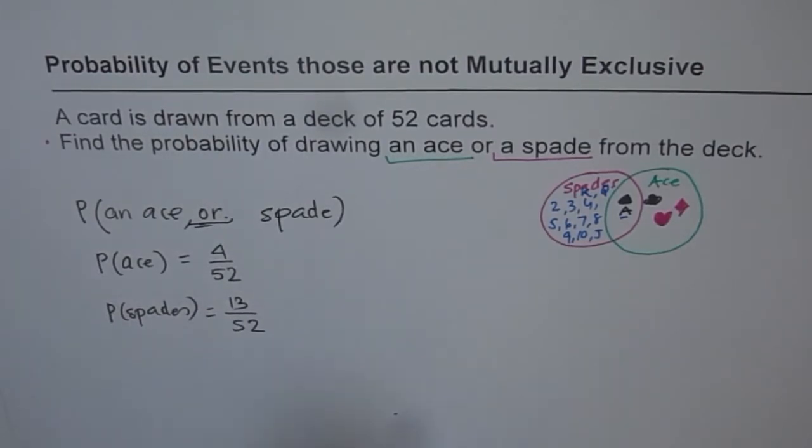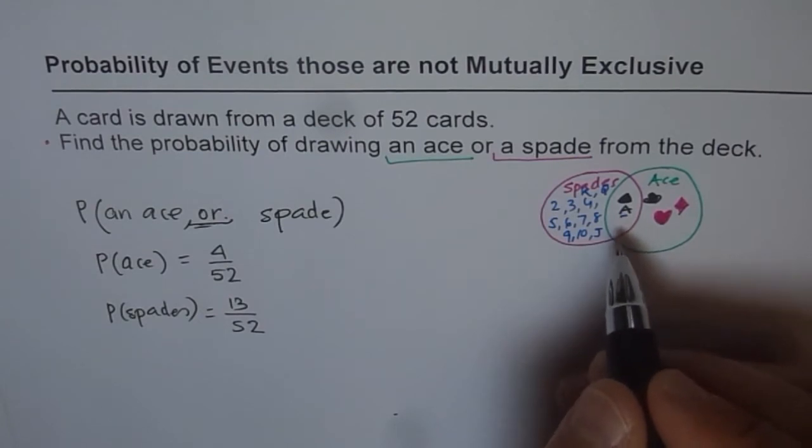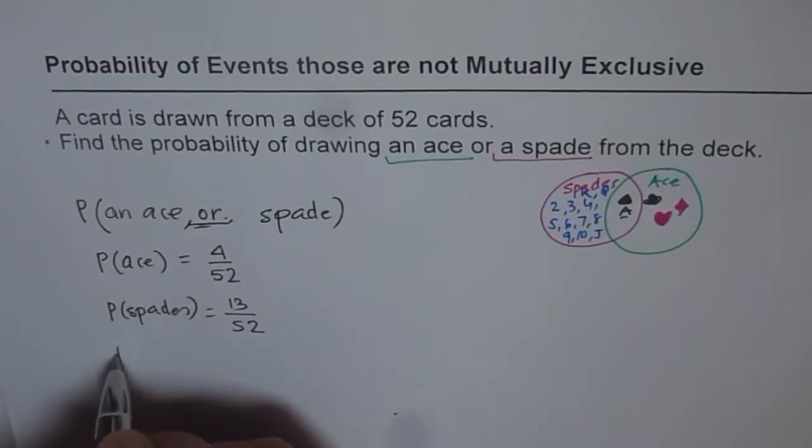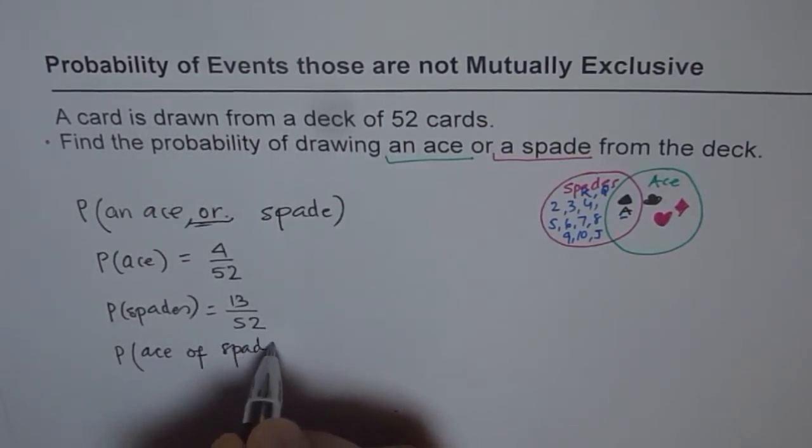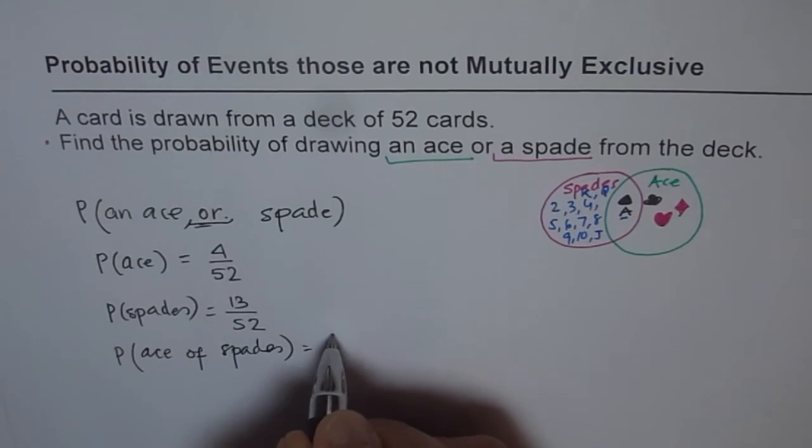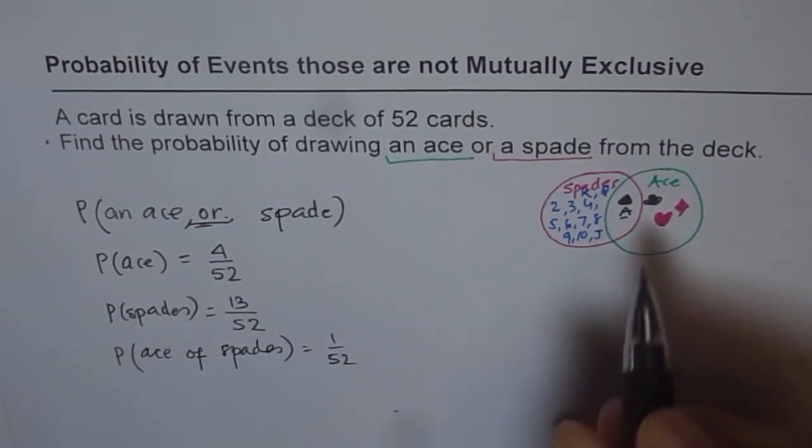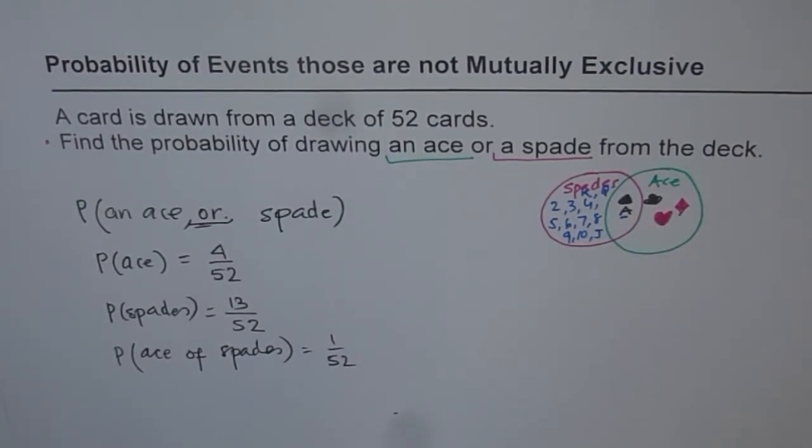Now out of these, when we see ace of spades is repeated. So what is the probability of getting ace of spades? That is 1 out of 52. Since there is only one ace of spades.